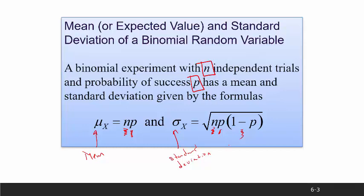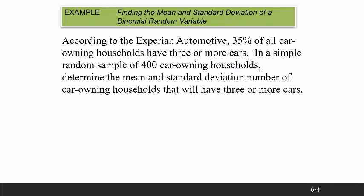I'm going to do two examples of this, and in the final example I'll talk about a way you can use these formulas to interpret something. So we'll go back to the problem from the previous lecture: according to Experian Automotive, 35% of all car-owning households have three or more cars. So the probability of success is 0.35, and in a simple random sample of 400 car-owning homes — that's our n — we need to determine the mean and standard deviation.